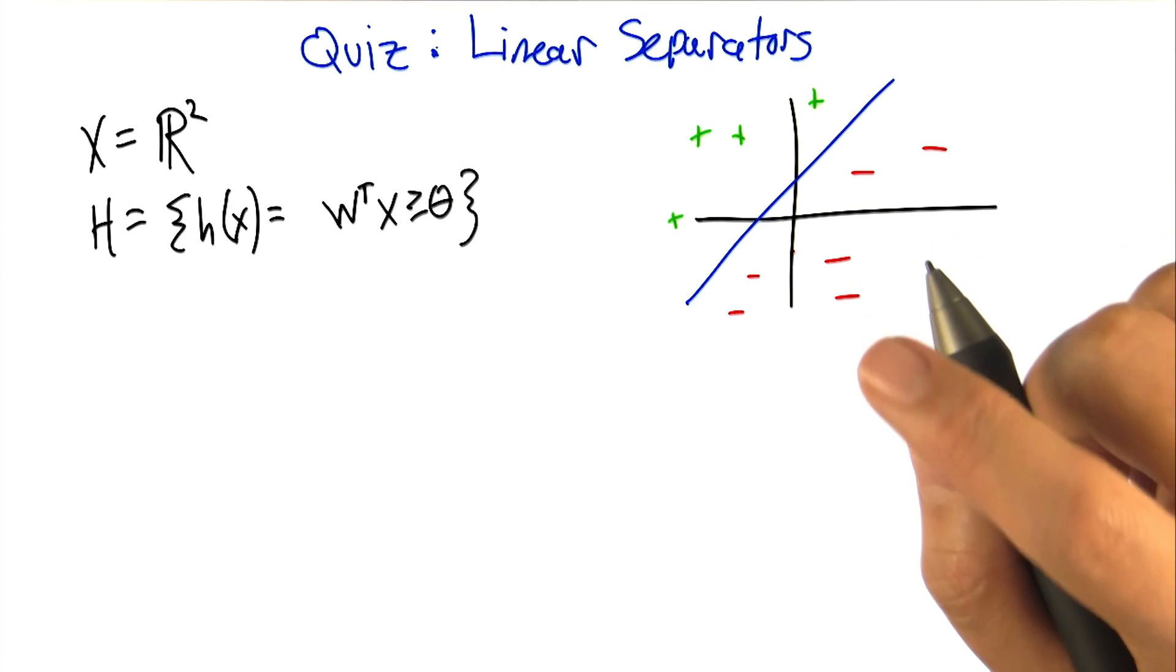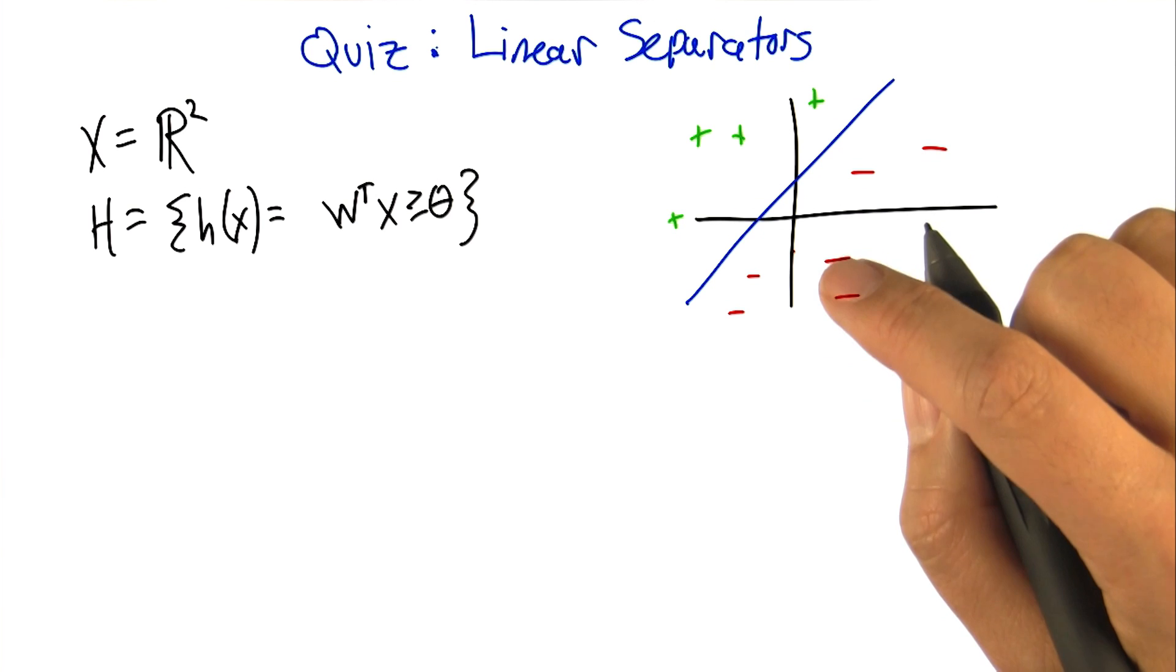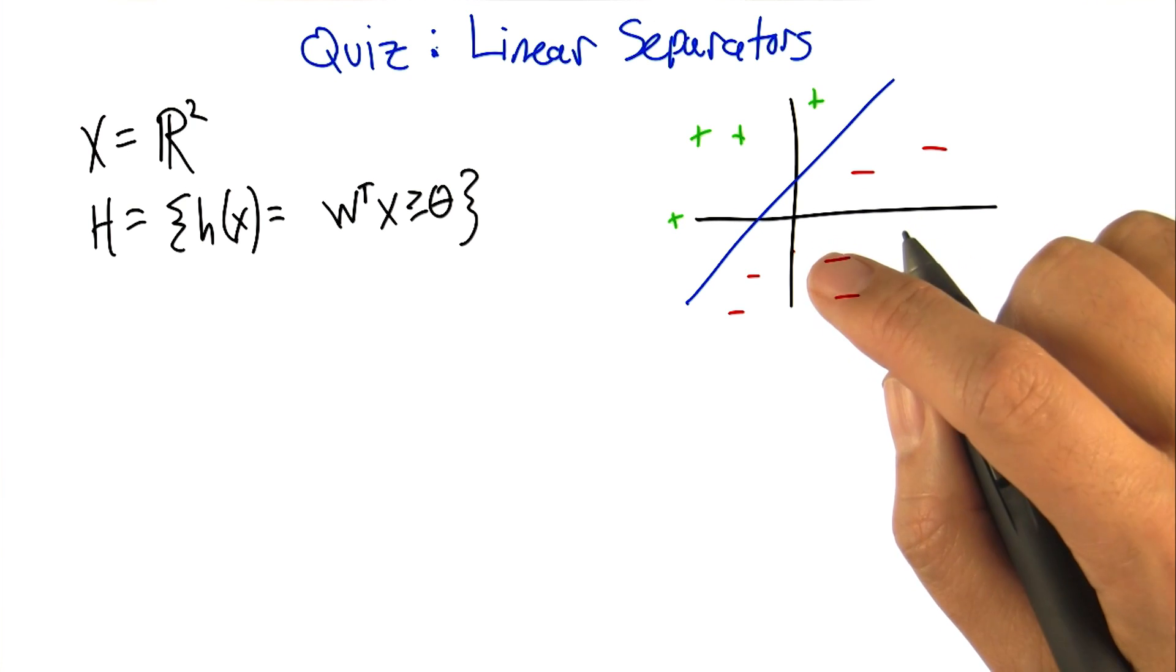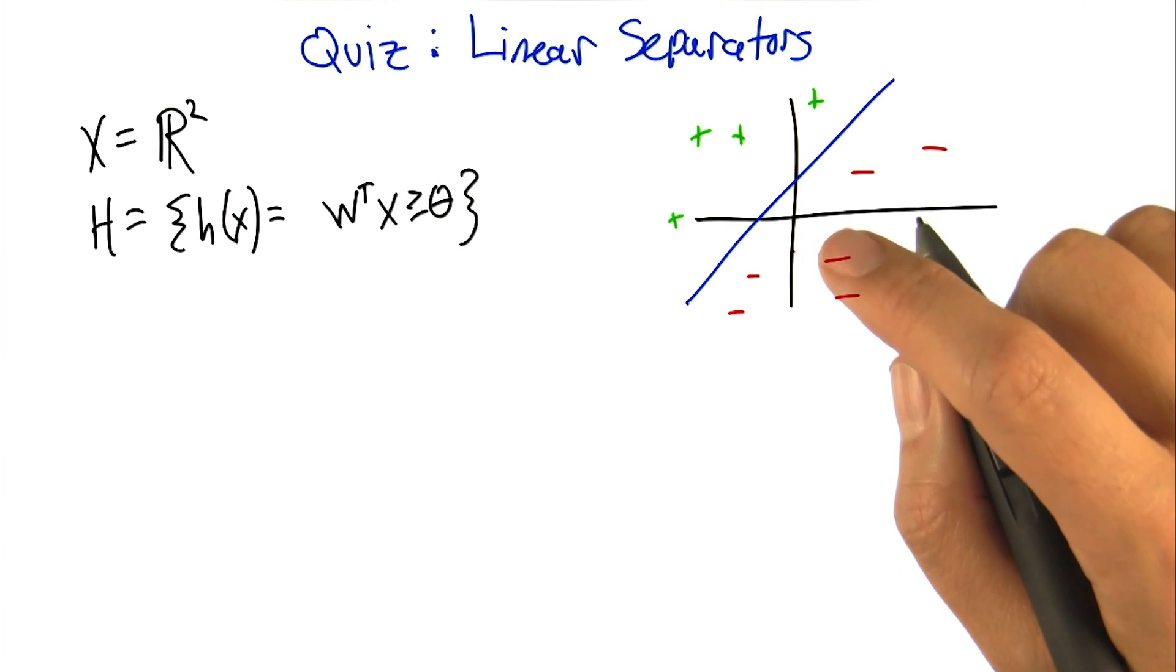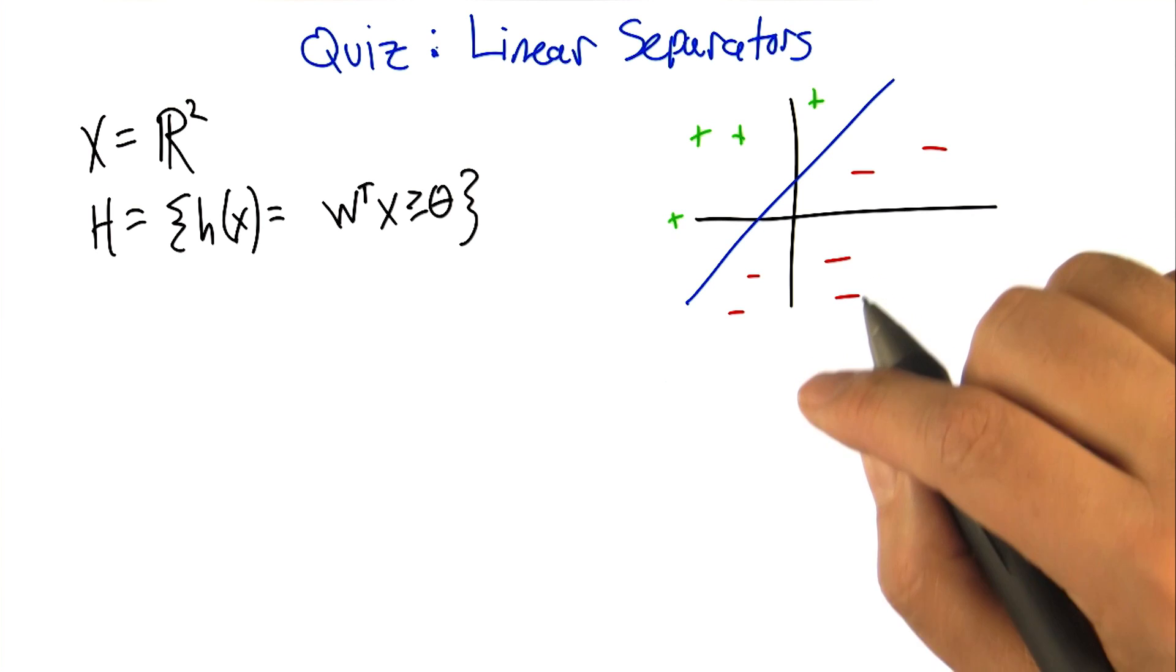On the other hand, linear separators are a very big deal in machine learning. So it's very worthwhile and it turns out to be not too bad to work out what the VC dimension is for linear separators.